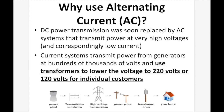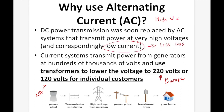DC power transmission was soon replaced by AC systems that transmit power at very high voltages and correspondingly low current. Current systems transmit power from generators at hundreds of thousands of volts and use transformers to lower the voltage to 220 volts or 120 volts for individual customers — 220 volts for most of Europe and much of the world, and 120 volts mostly for North America. High voltage means low current, and low current means less loss of electricity as it travels from point A to point B.